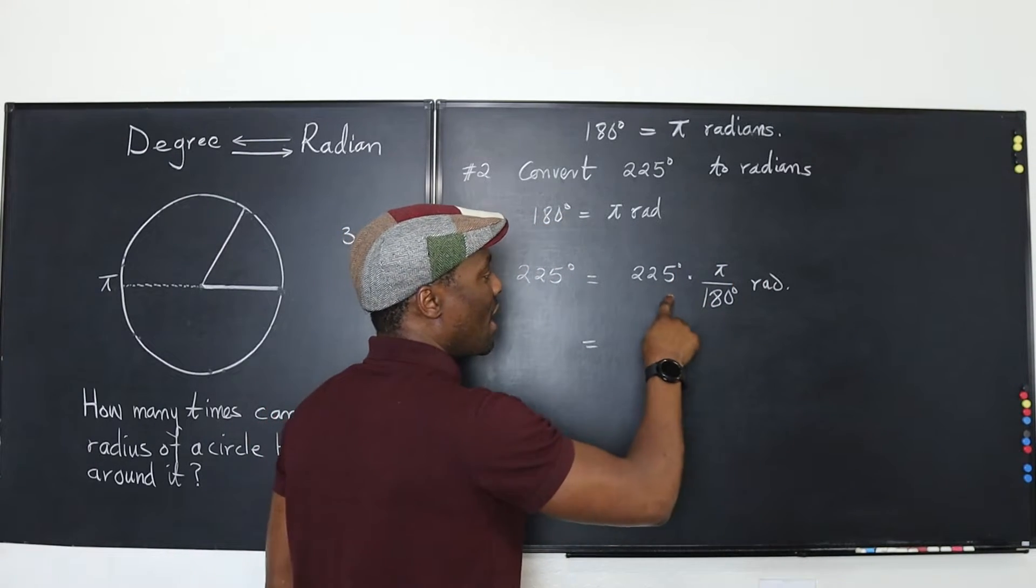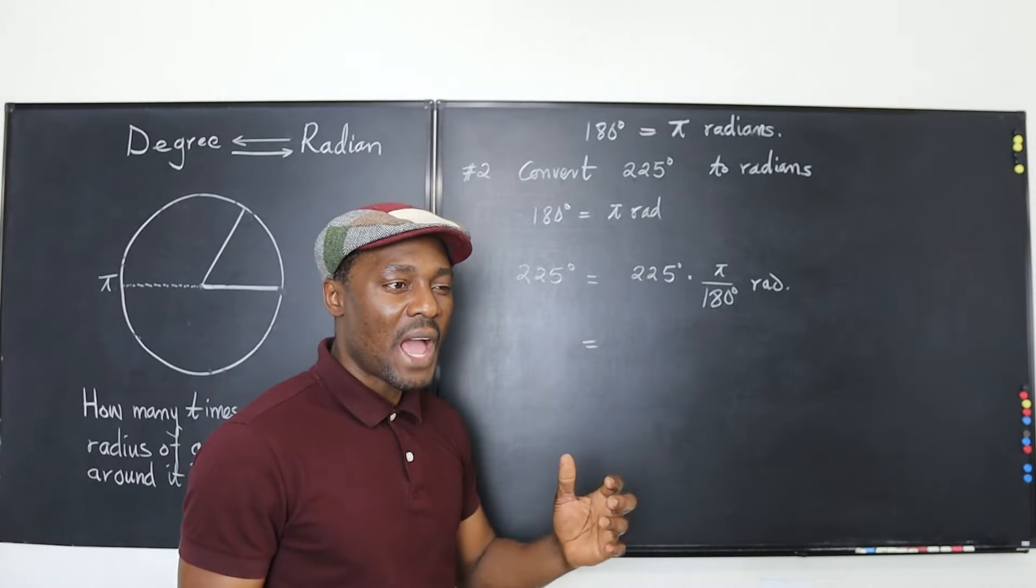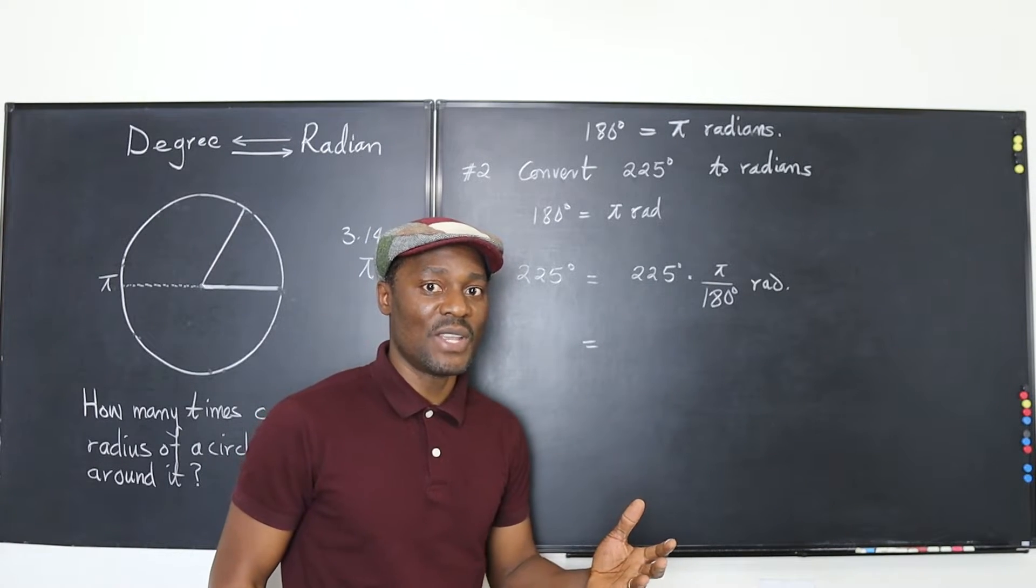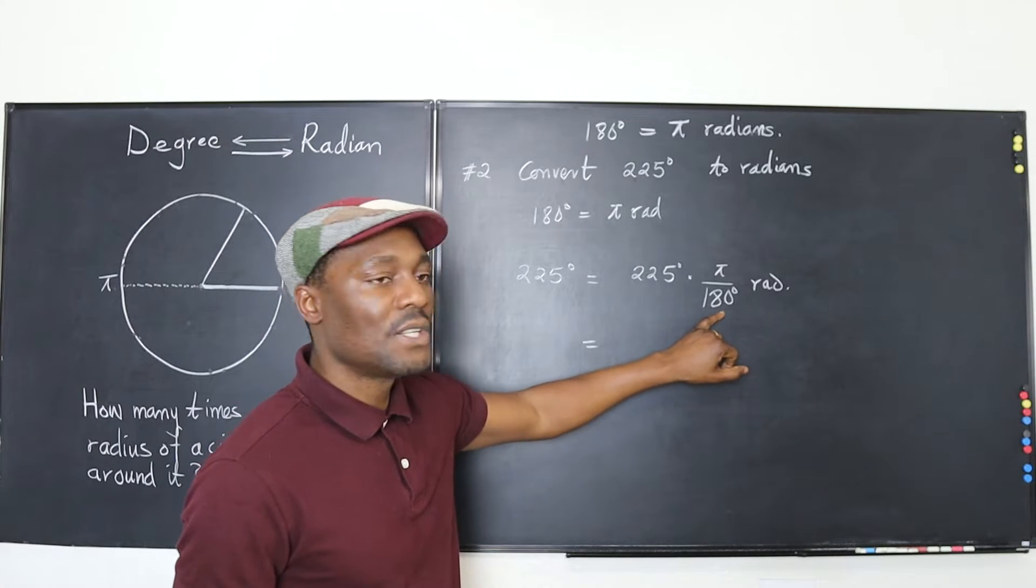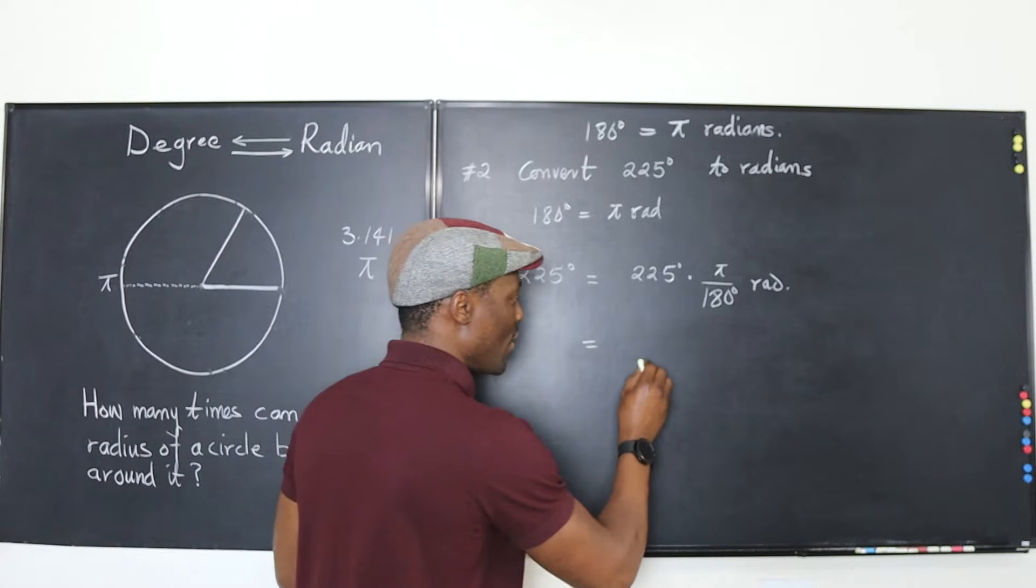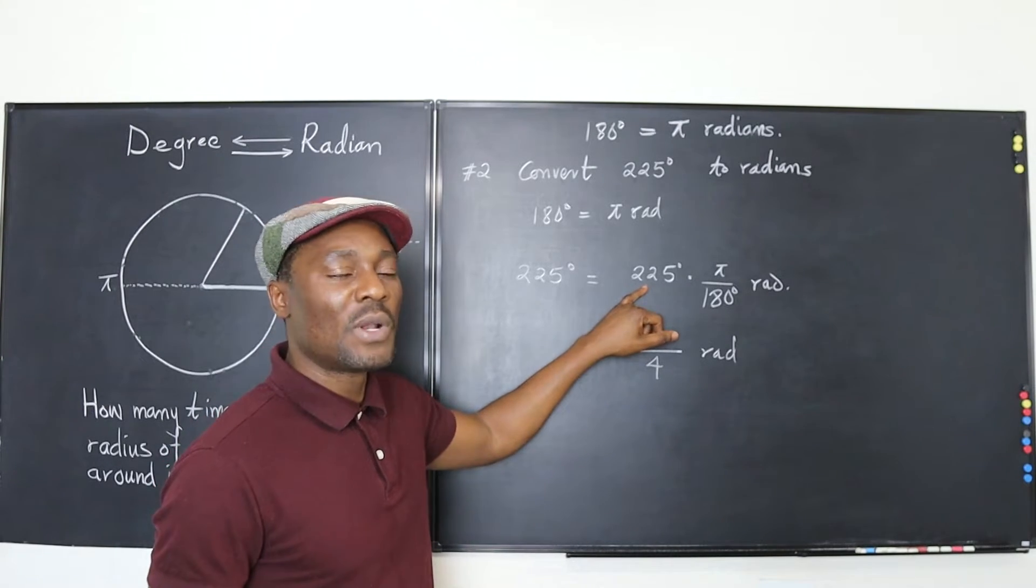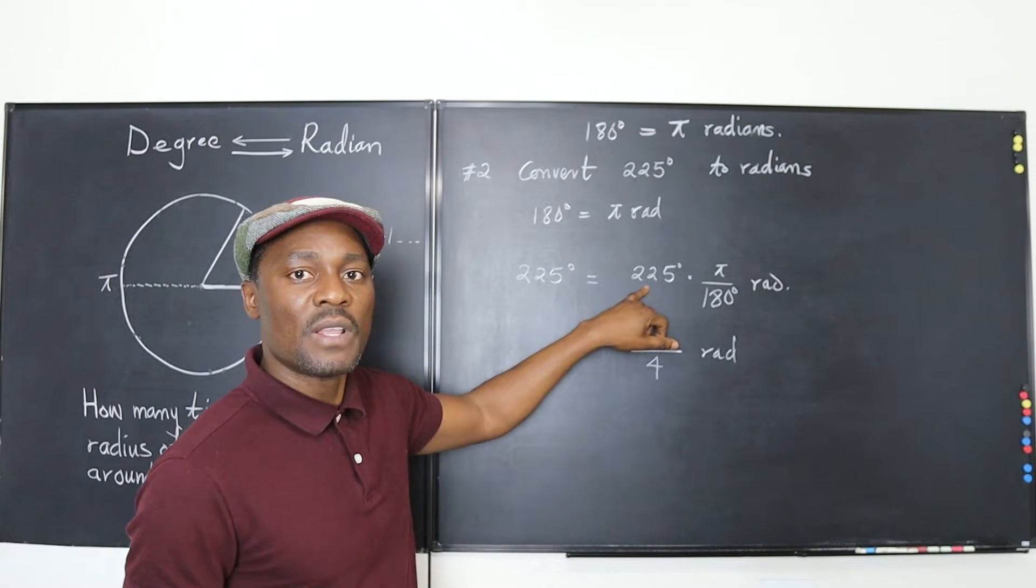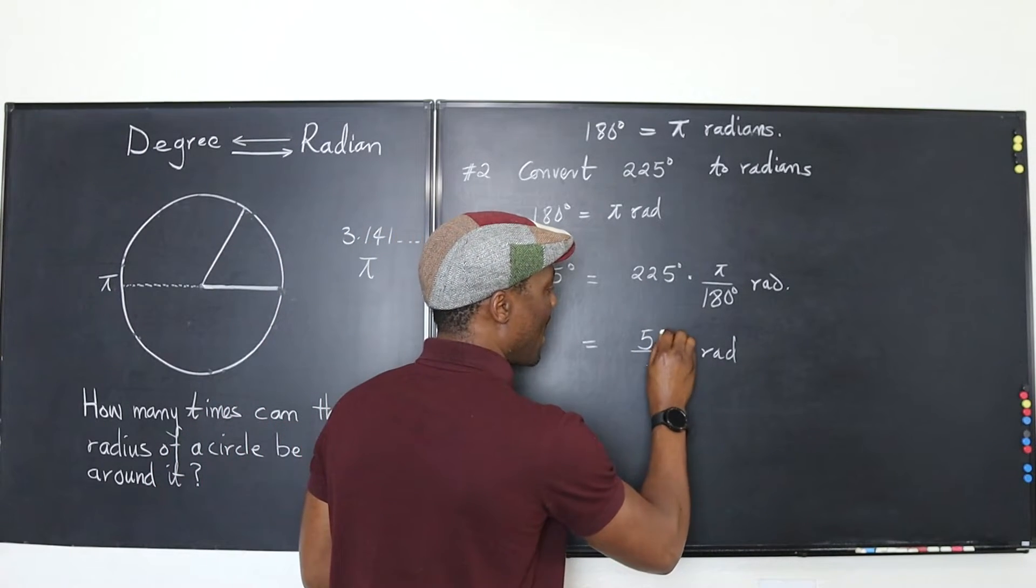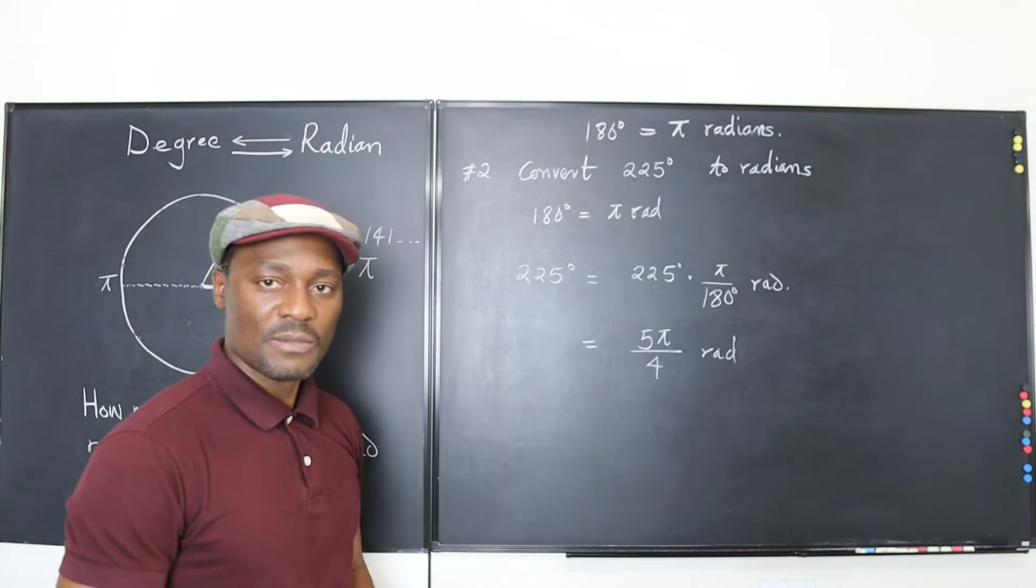And this tells me I'm going to find a number that divides 225 and also divide 180. But I have to think of the largest number. Because I've done this often I know that this is 45 degrees. So how many 45s will be in 180? That's 4. So I know I'm going to have 4 in the denominator as part of my answer. How many 45s will I get in 225? That's 180 plus another 45, so that's going to be 5. So this is going to be 5 pi over 4 radians. And that's my answer.